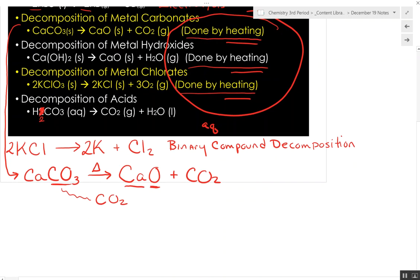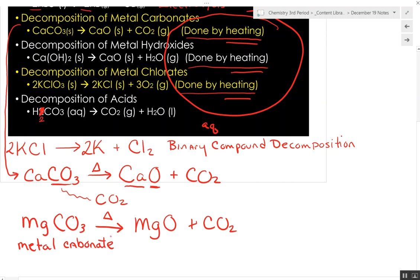We can see here if I did this with magnesium carbonate, heated it up, triangle again, it would decompose into magnesium oxide and CO2. So you start with a metal carbonate and it decomposes into a metal oxide and carbon dioxide. That is the same formula for each decomposition of a metal carbonate.